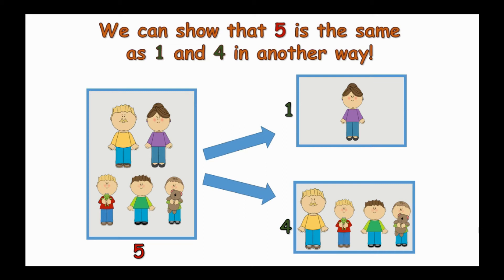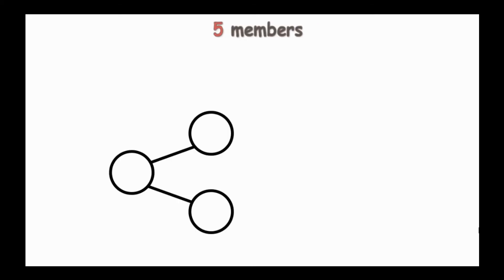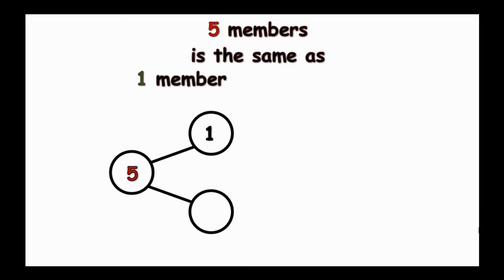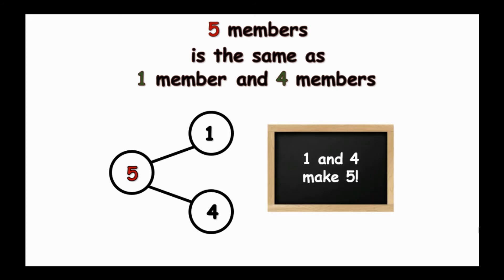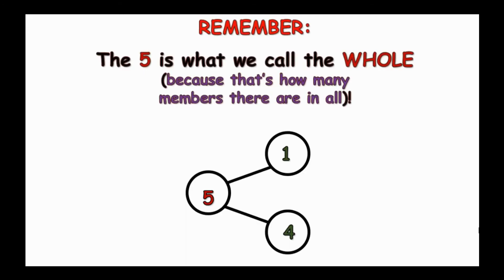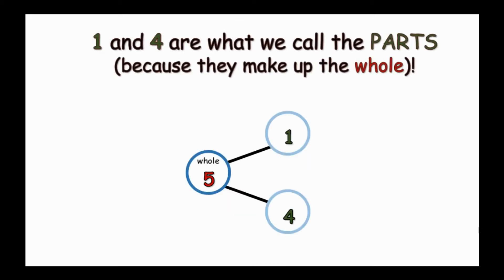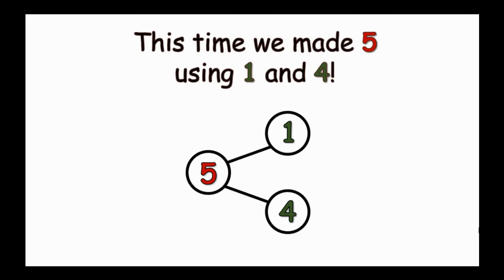We can show that five is the same as one and four in another way. Five members is the same as one member and four members because one and four make five. So, remember that five is what we call the whole because that's how many members there are in all. And one and four are what we call the parts because they make up the whole. This time, we made five using one and four.